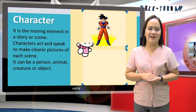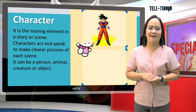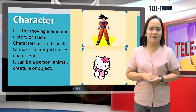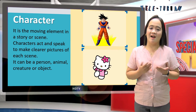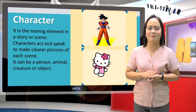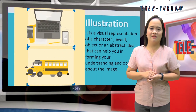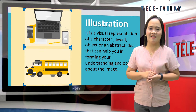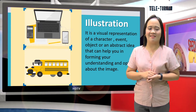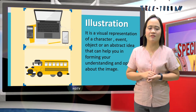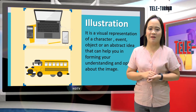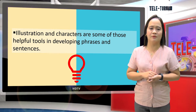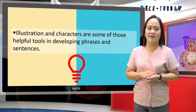A character is the moving element in a story or scene. Characters act and speak to make clearer pictures of each scene. It can be a person, animal, creature, or object. An illustration is a visual representation of a character, event, object, or an abstract idea that can help you in forming your understanding and opinion about the image.